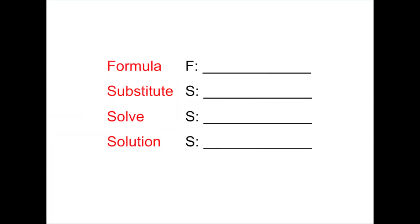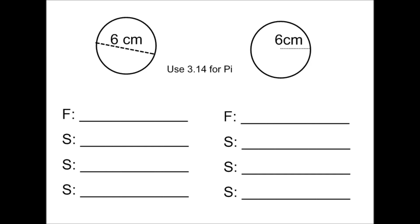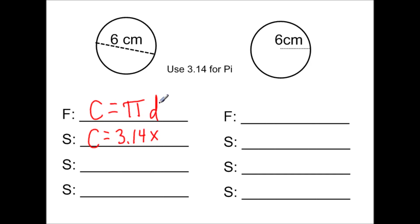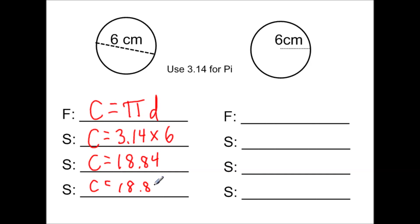Let's try a few examples. Whenever I'm using formulas, I like to write down the formula, substitute in, solve, and then write the solution with a label. For the first circle, using circumference equals pi times d: we substitute 3.14 for pi and multiply by the diameter of 6. So 6 times 3.14 equals 18.84. The circumference is 18.84 centimeters — just centimeters, since we're measuring a linear distance.